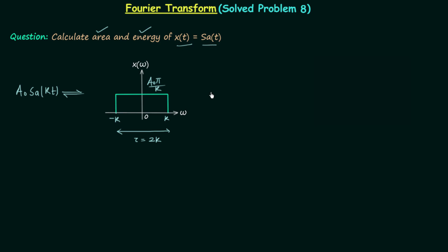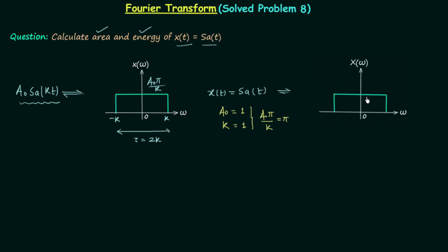In our case x(t) = sinc(t). Comparing this with the generalized sinc function, we find a0 = 1 and k = 1. This implies a0*π/k = π. So this time-domain signal has a Fourier transform that is a rectangular function with amplitude π, ranging from ω = -1 to ω = +1.